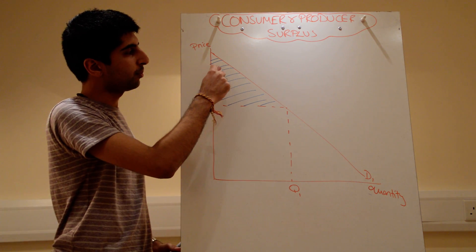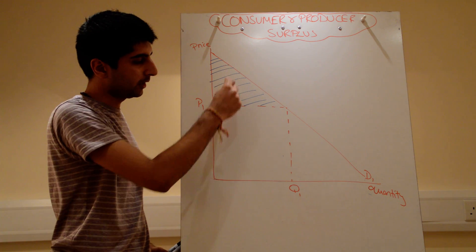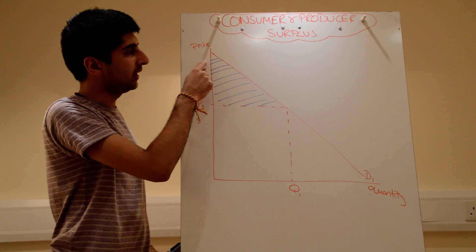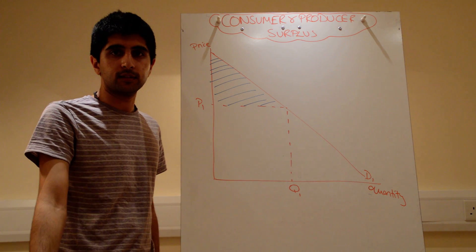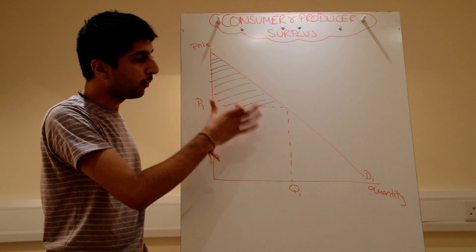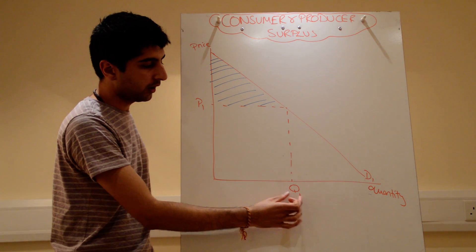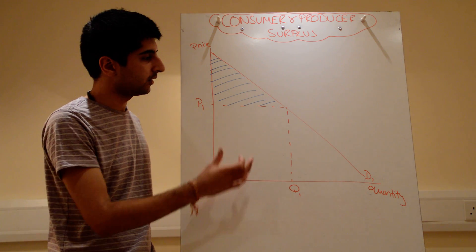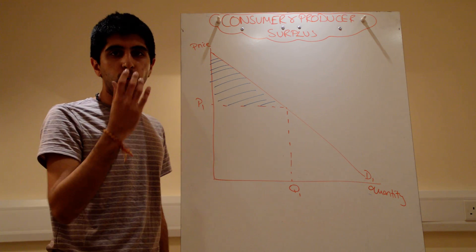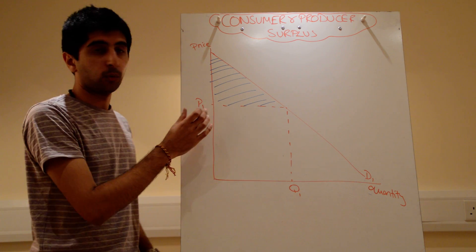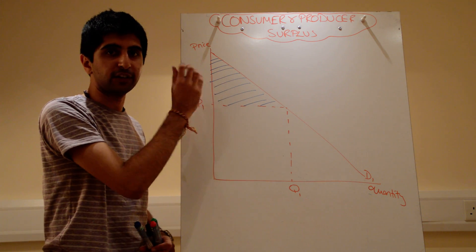So some consumers would have been willing to pay this price up here. The quantity demanded would have been down there, but actually, by them paying P1 only, they're benefiting by that entire distance. All right, and they're buying more, they're buying a higher quantity than what they would have done otherwise. So that entire triangle measures the welfare gain by the price being at P1. All these consumers are benefiting by that shaded area.